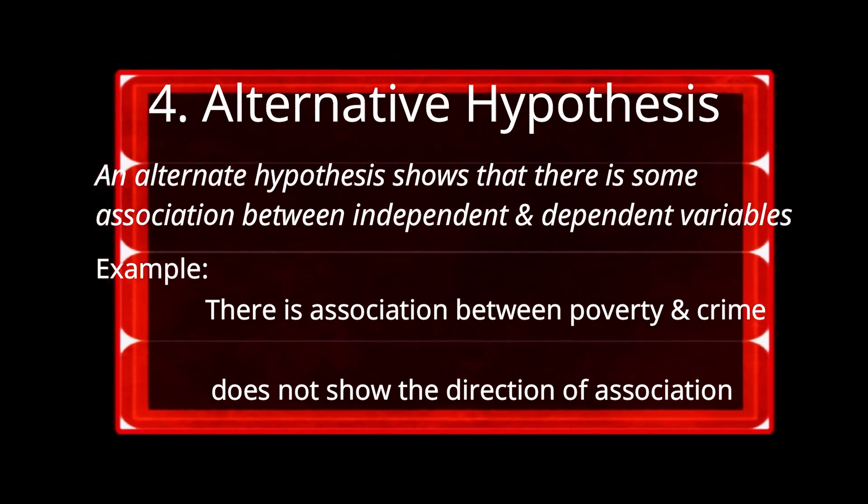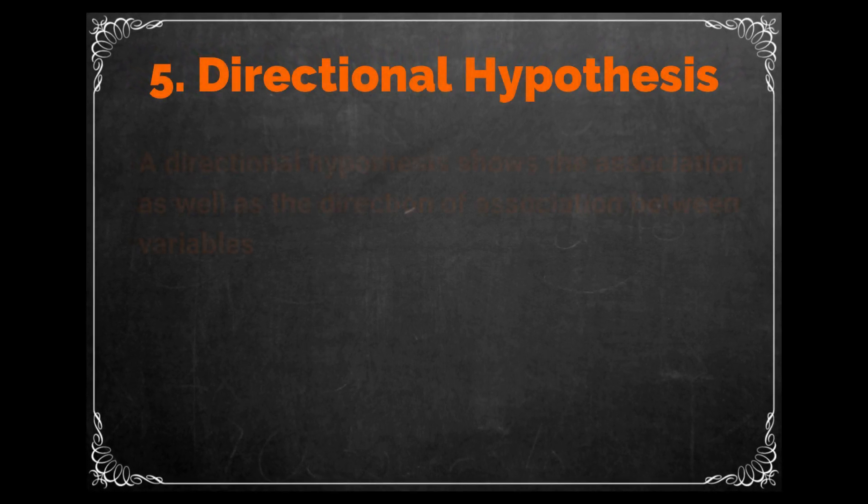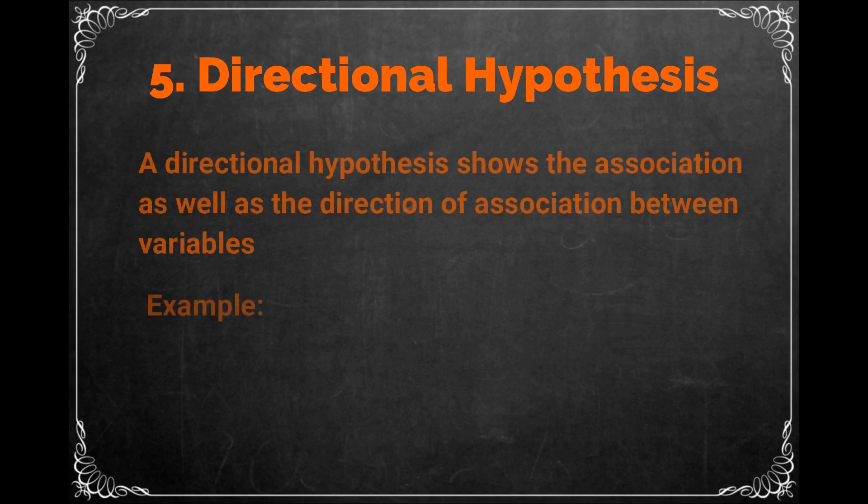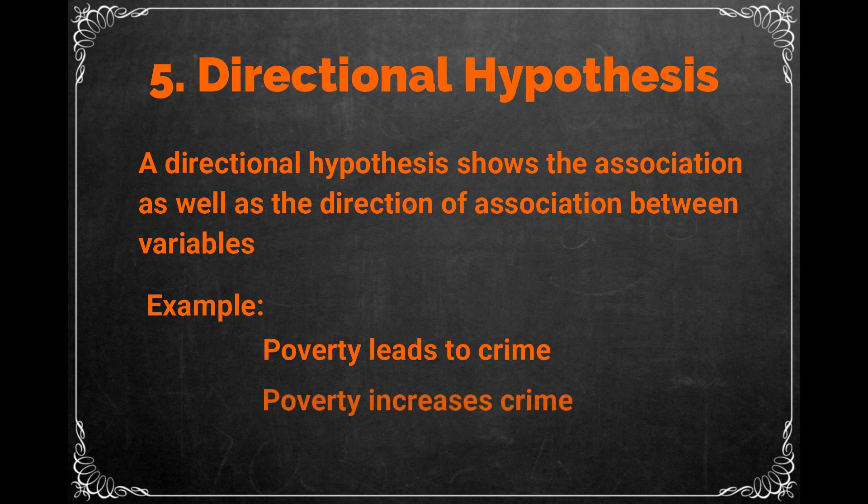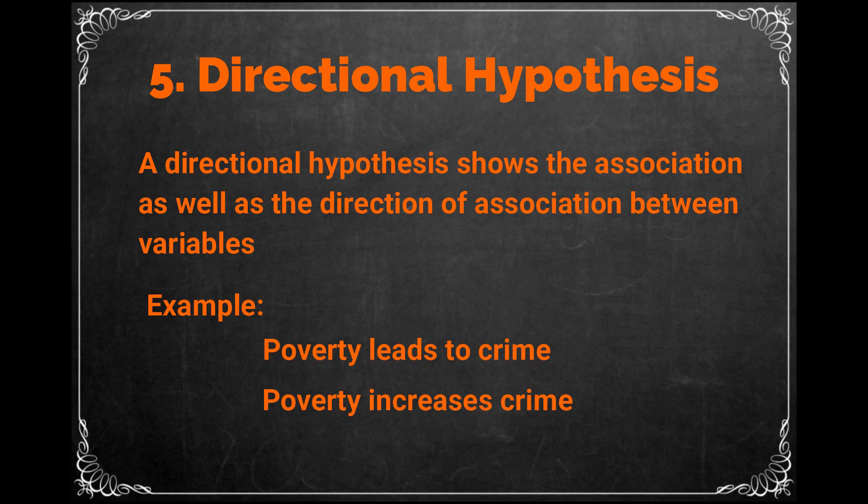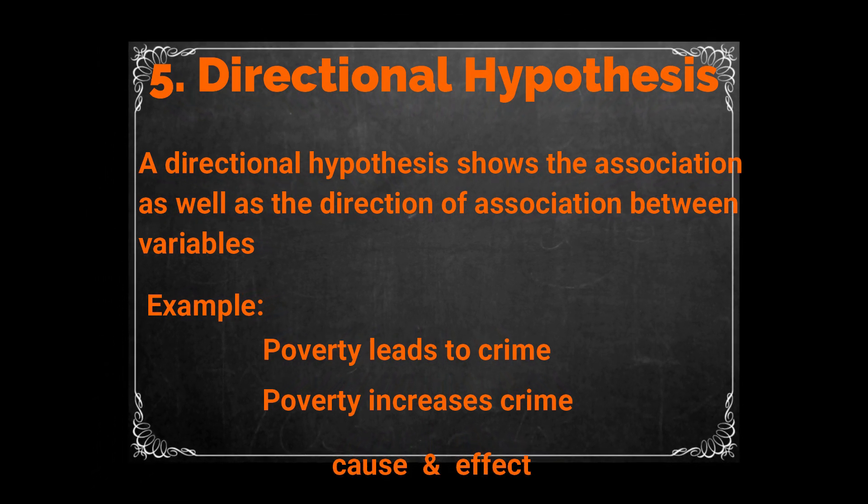Therefore, according to the requirement of research, you may use directional hypothesis. A directional hypothesis not just shows that there is an association between two variables, but it also shows the direction of hypothesis. For example, poverty leads to crime. Poverty increases crime. In this case, poverty is an independent variable while crime is a dependent variable. And the statement or the hypothesis shows that increase in poverty will result in increase in crime. So we can see directional hypothesis also shows cause and effect relationships.